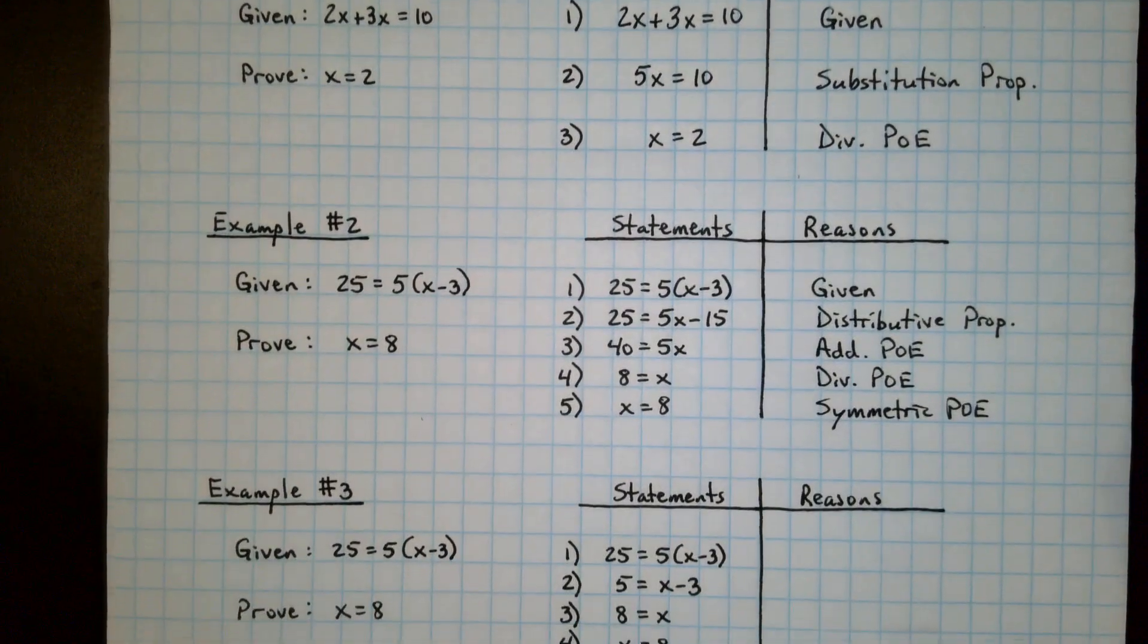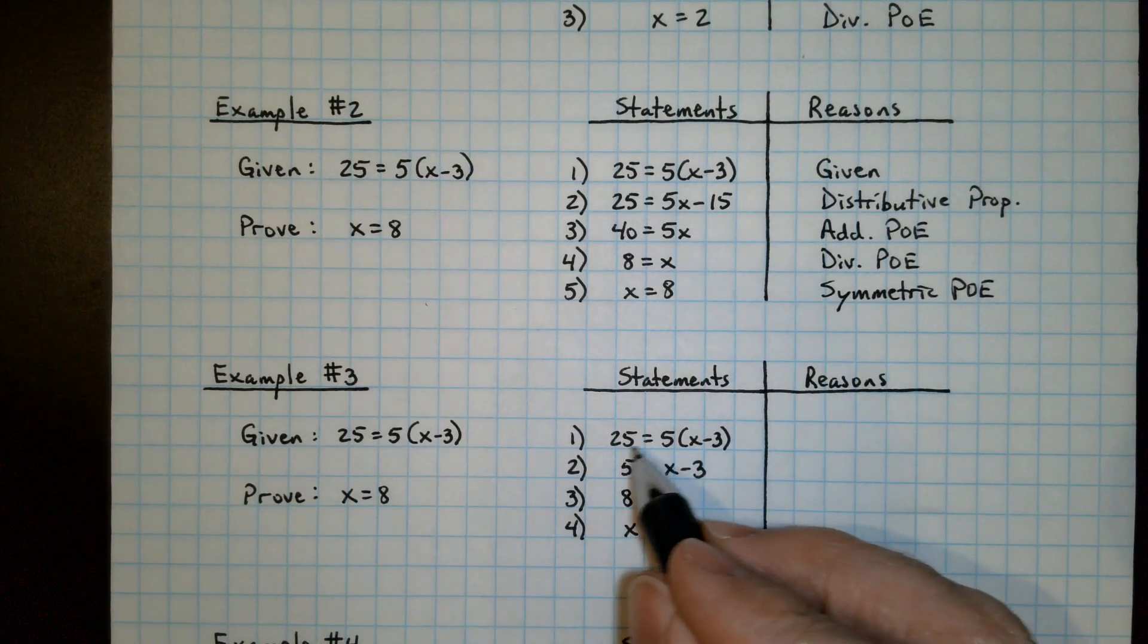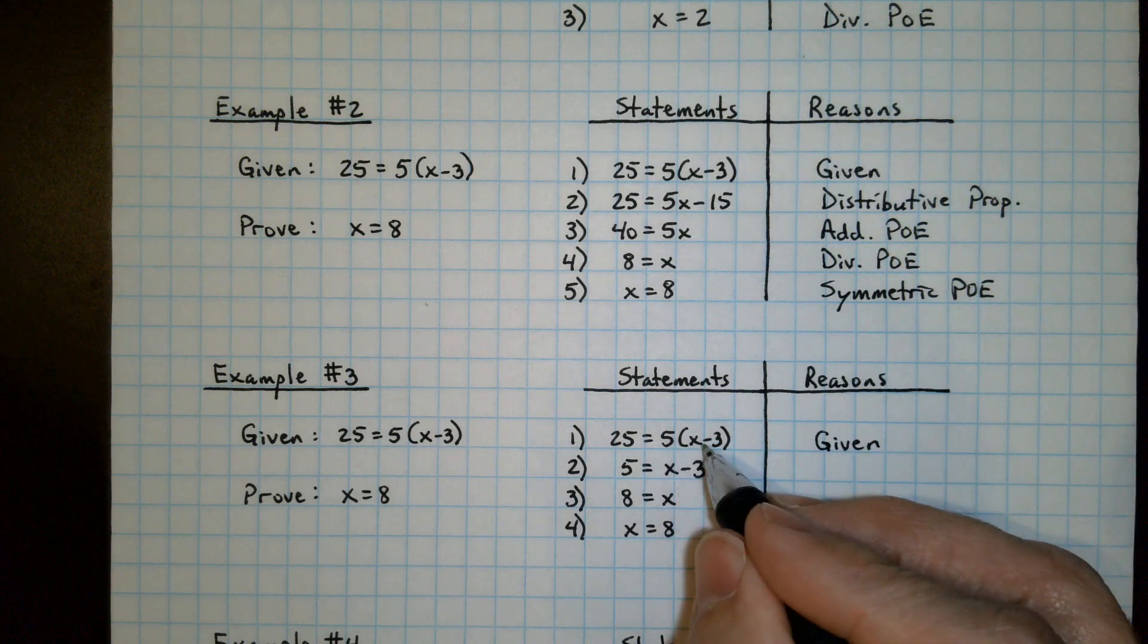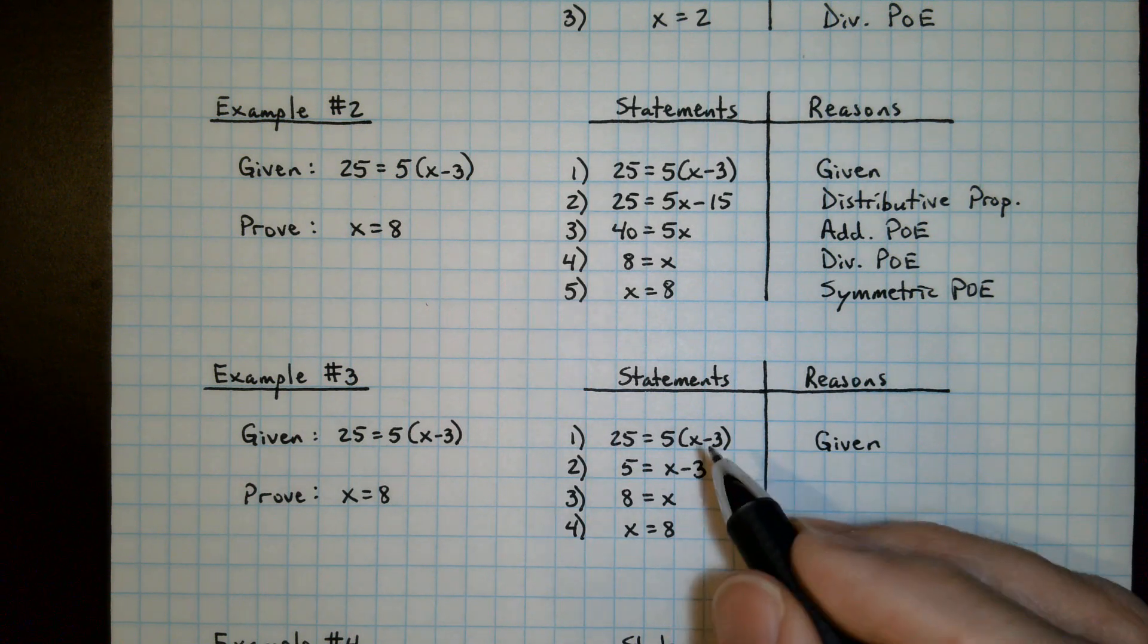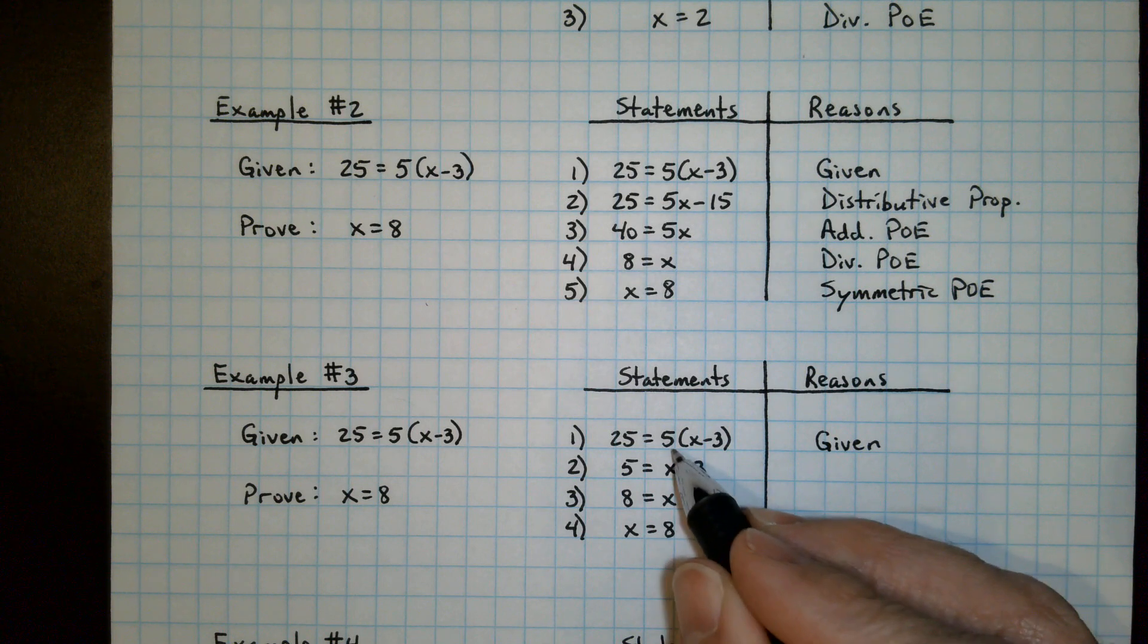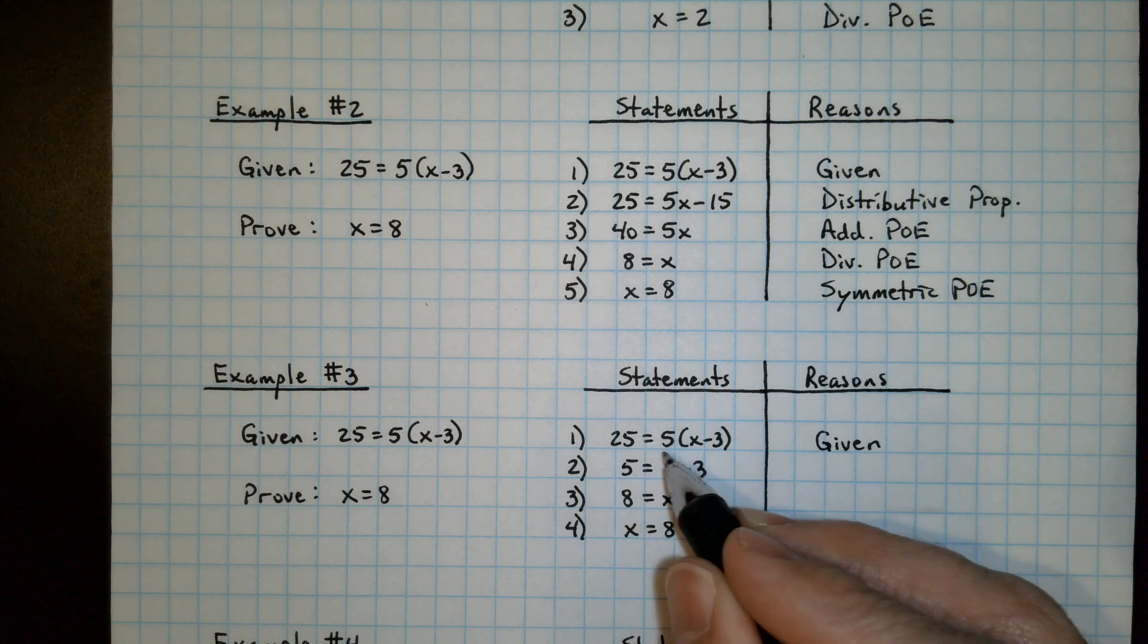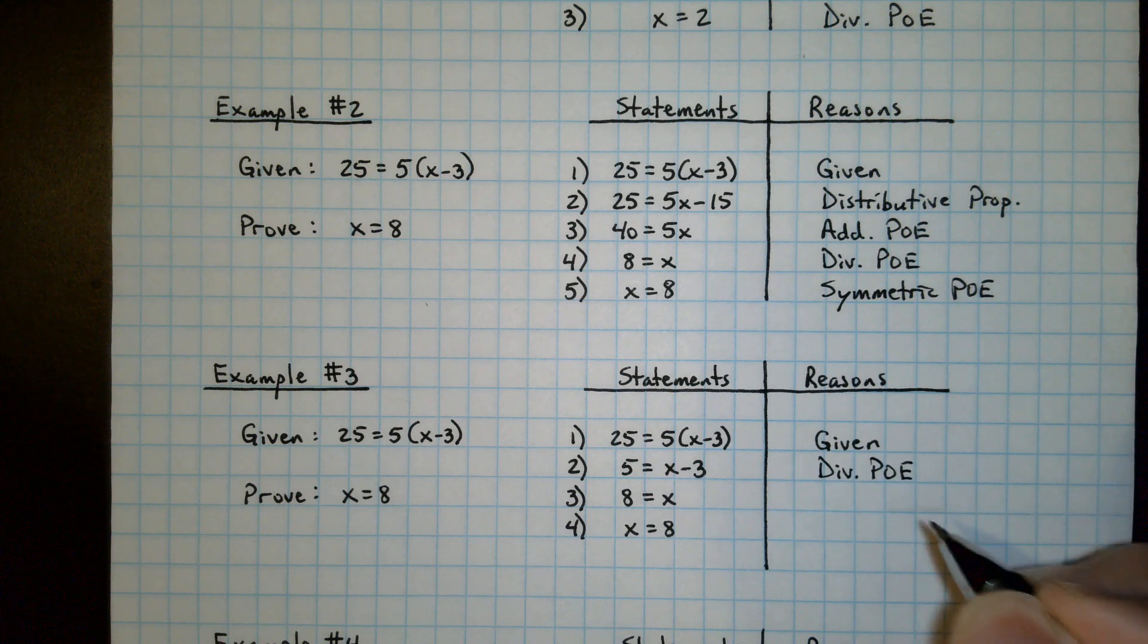As we move down to a couple more examples. Example 3, we have this given information. We have the statement provided here. And so that is given for the reason. We're distributing again, it seems like. But always have to pay attention to actually what did happen. The 5 seemed to have gone away here. We didn't change these values. The 5 went away. So actually what happened was we divided by 5 on each side. This is the division property of equality.